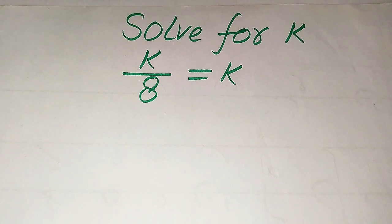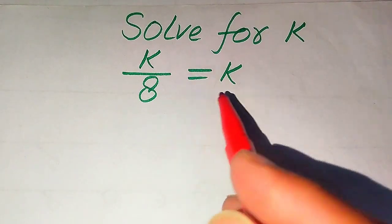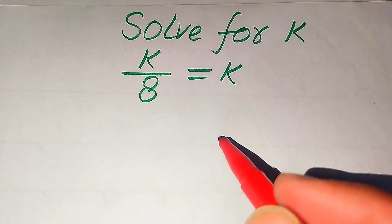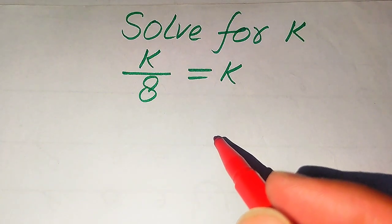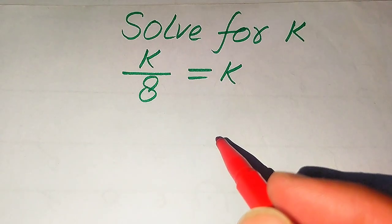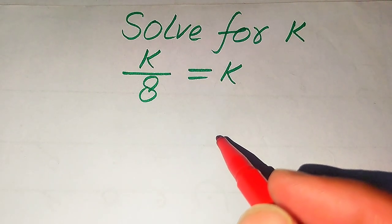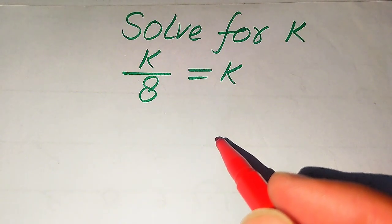Hello everyone. How to solve this problem for the values of k. If we have k divided by 8 equals k, and we solve this problem for all the values of k. Here first we find all the roots and at the last we will verify which of the roots are solutions and which of the roots are extraneous roots. Further at the last I will explain the difference between solution and extraneous root.